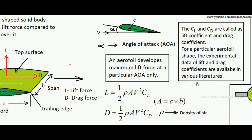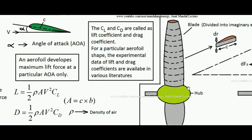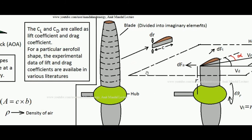Hello students. In this lecture we will learn what is the Blade Element Method applied to wind turbines. I have divided this lecture into two parts. In the first part we will learn about the different kinds of forces developed on the blade of a wind turbine, as well as the velocity vectors and how to make the vector diagram associated with a wind turbine. In the second part I will cover the associated derivations.